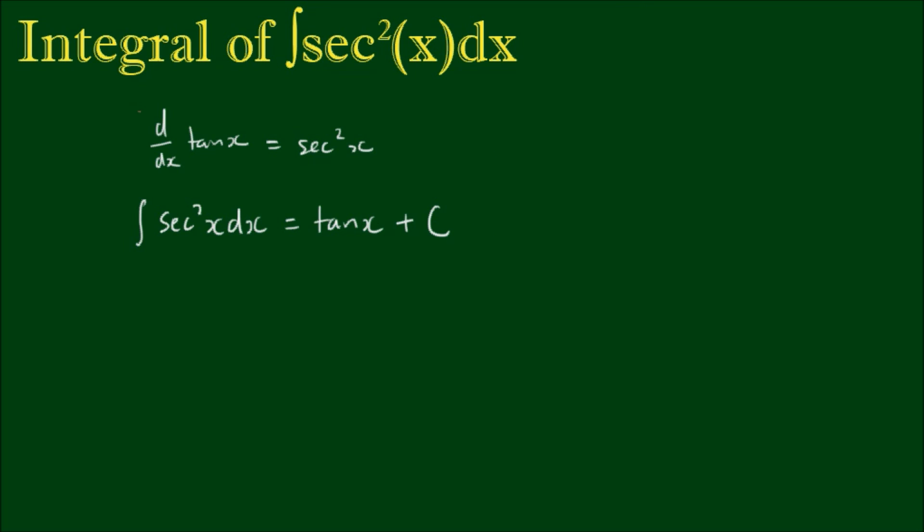Someone pointed out that the problem with this integral is that you need to know this result in the first place. So is there a way of performing this integral without knowing that the derivative of tan is equal to secant squared x? The answer is yes — there are actually multiple ways, but ironically all of them require quite a higher level of calculus.